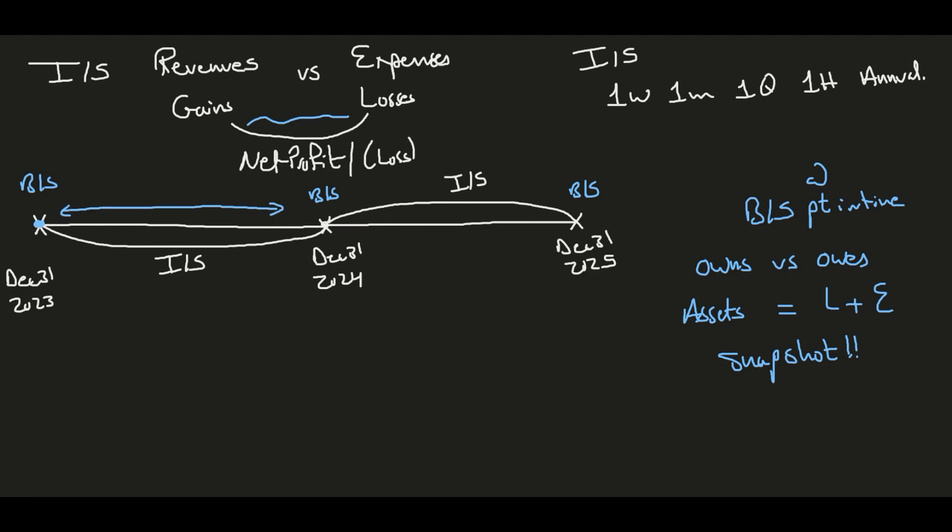This result, which is the net profit for this specific period of time, will be poured right into the balance sheet of this point in time. Whatever is the result - let's say it is $30,000 - it will be moved right into the balance sheet into the retained earnings account, which is part of the equity section.